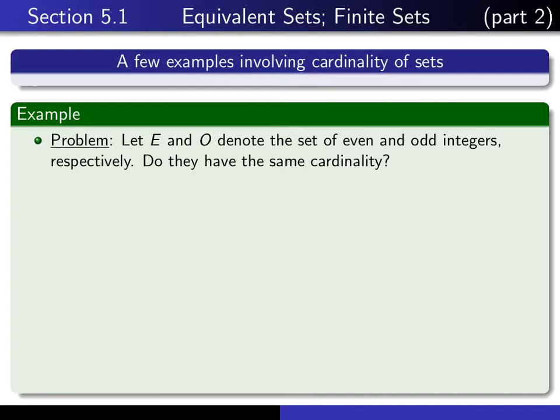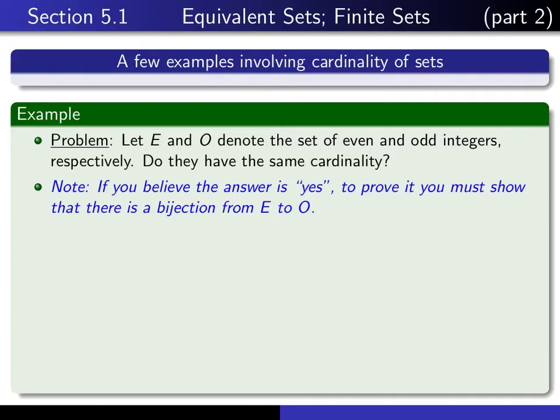So maybe you're not quite sure, but it turns out the answer is that they do have the same cardinality, and so if you believe that they do have the same cardinality, in order to prove it, you have to show that there's a bijection from the set of even integers to the set of odd integers. Your intuition, one way or the other, doesn't really count.